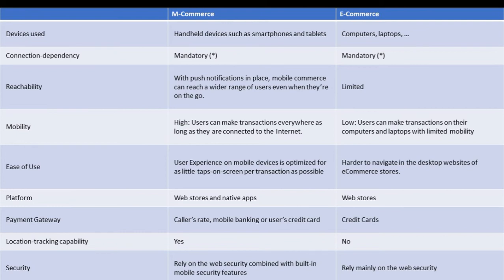Regarding reachability, with push notifications in place, mobile commerce can reach a wider range of users even when they are on the go — you get notifications on your mobile phone at all times. E-commerce is somewhat limited; you only get notifications when you switch on your laptop or computer. Regarding mobility, m-commerce mobility is very high — users can make transactions everywhere as long as they are connected to the internet.